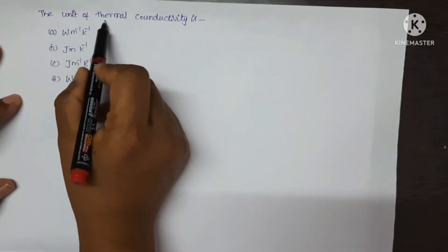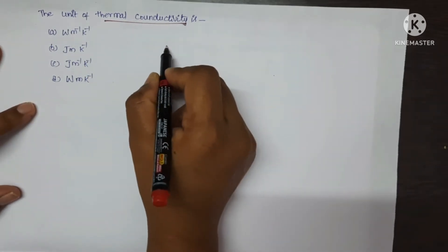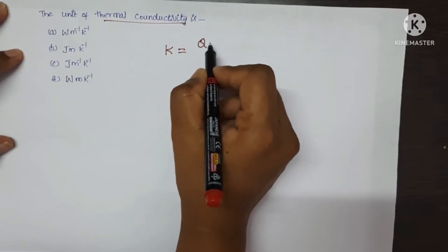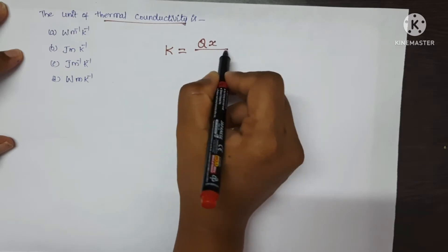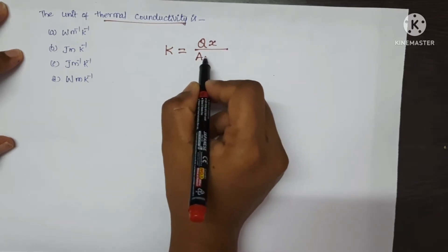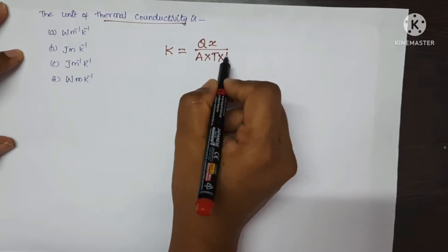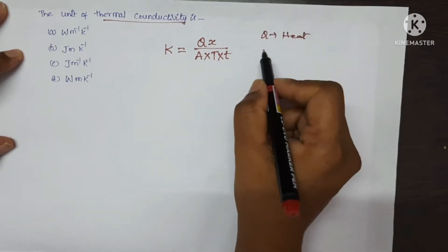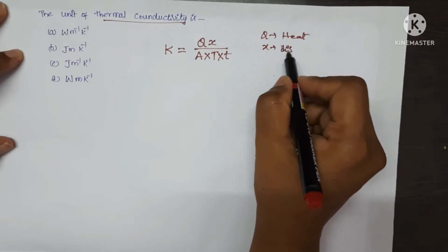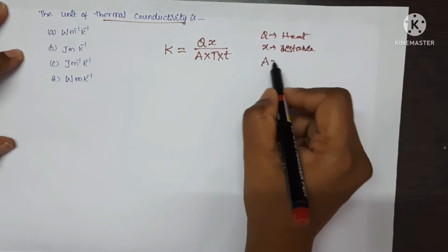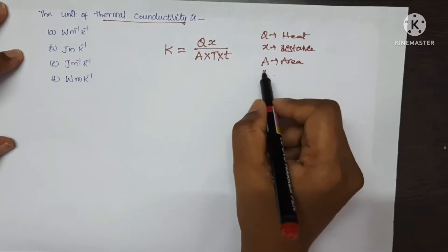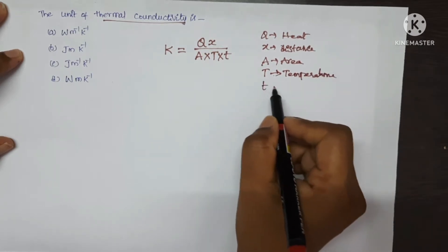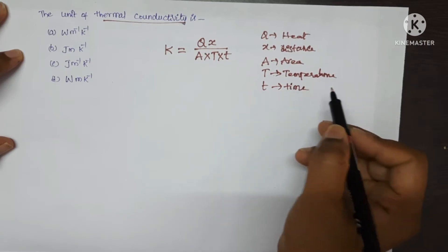Let's see the first question. The unit of thermal conductivity is. Thermal conductivity K is equal to the formula: Q into distance upon area of cross section, multiplied by temperature, multiplied by time. Here Q is heat energy, X is the distance, A is area of cross section, capital T is temperature, and small t is time.